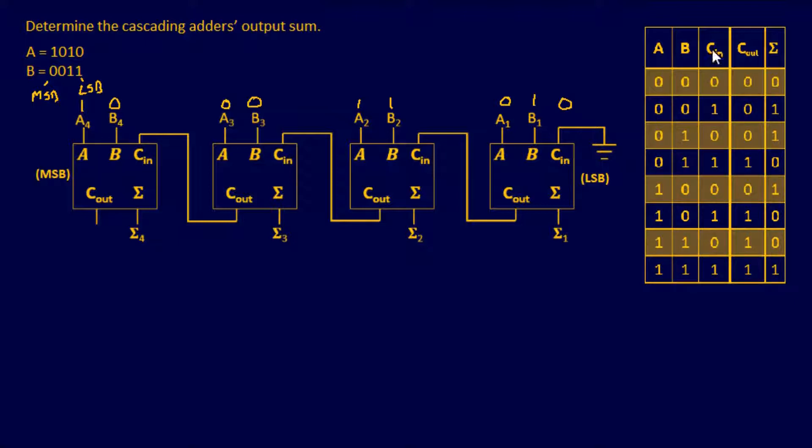Well, looking at our truth table, if you have an A, 0, B, 1, and C is 0, it gives us an output of Cout equals 0. So right here we have 0. And then a sum of 1. So I'm going to put a 1 right there.